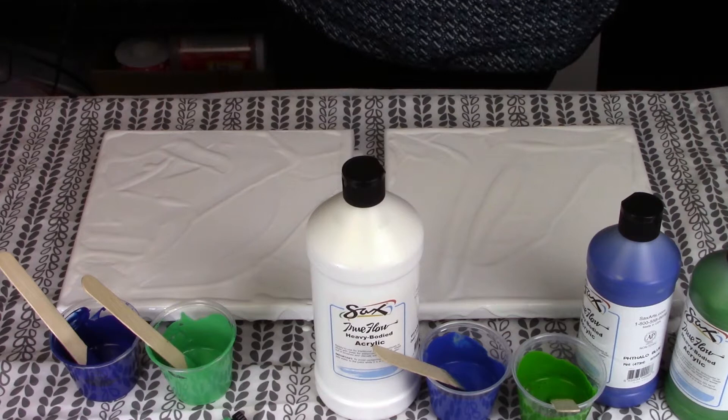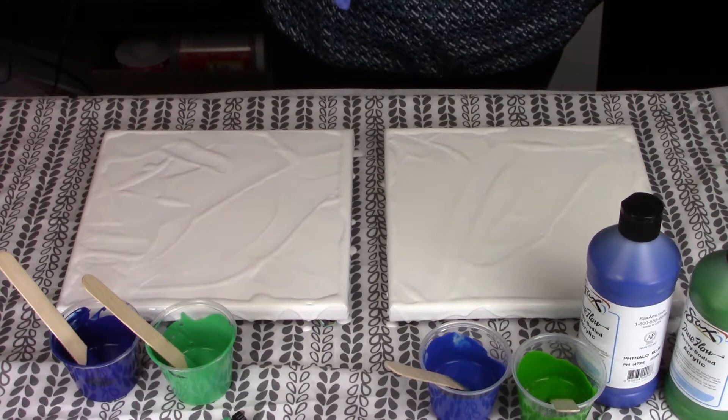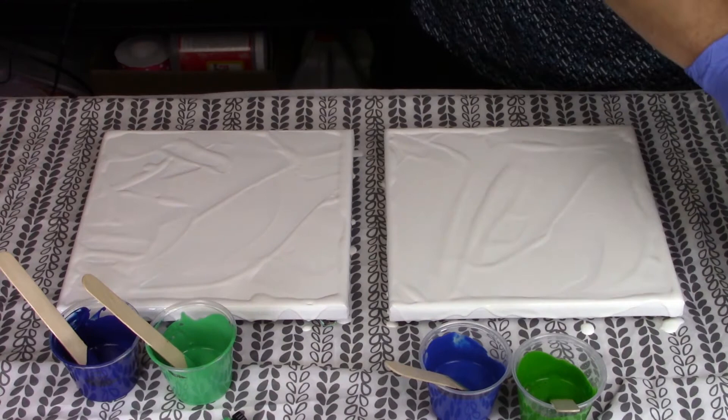I've got two 10 by 10 canvases in front of me. White Saks Heavy Body Acrylic already on there with the glue and water mixed. I'll move that out of the way. Move these big bottles out of the way now that I've shown you.